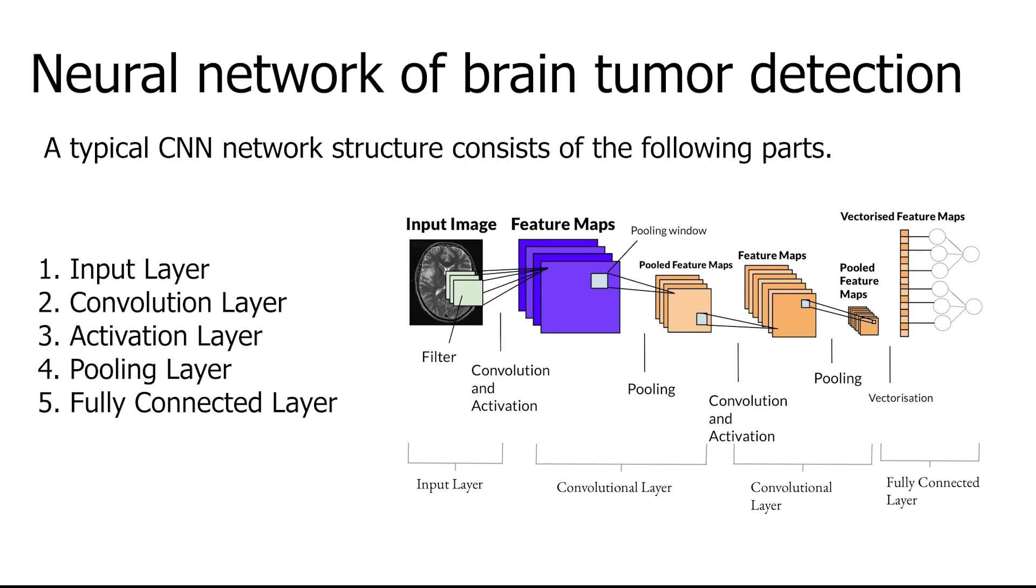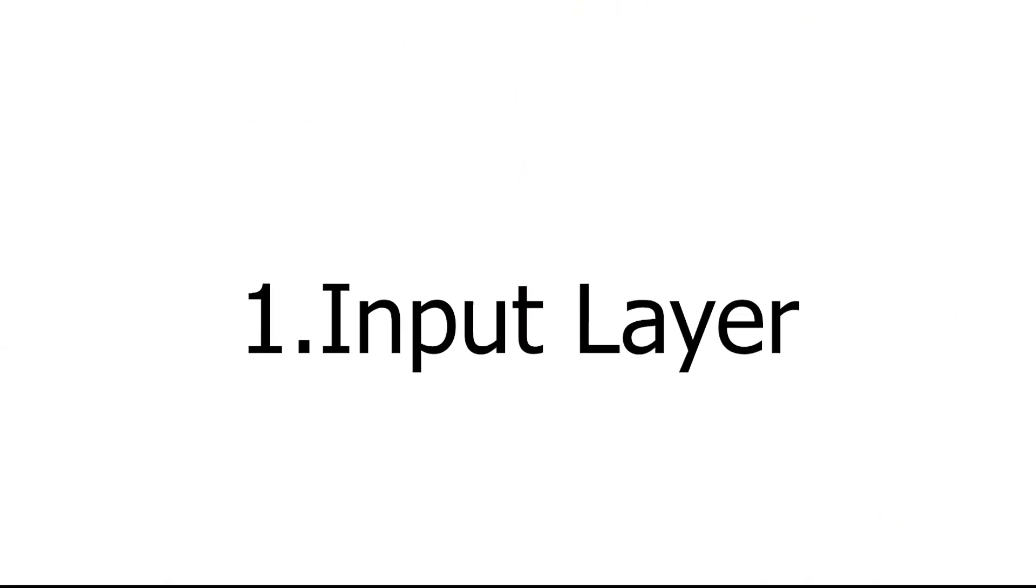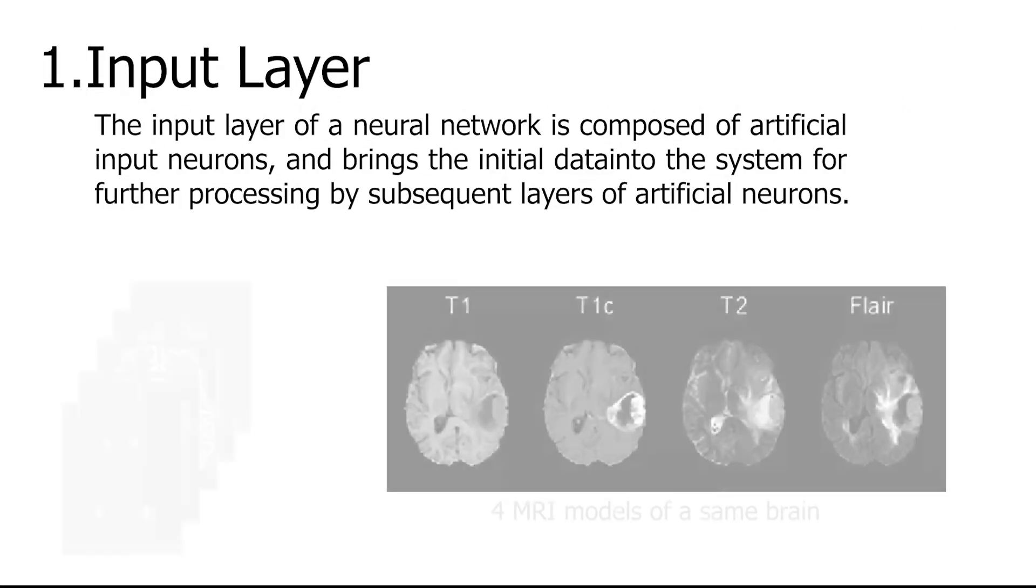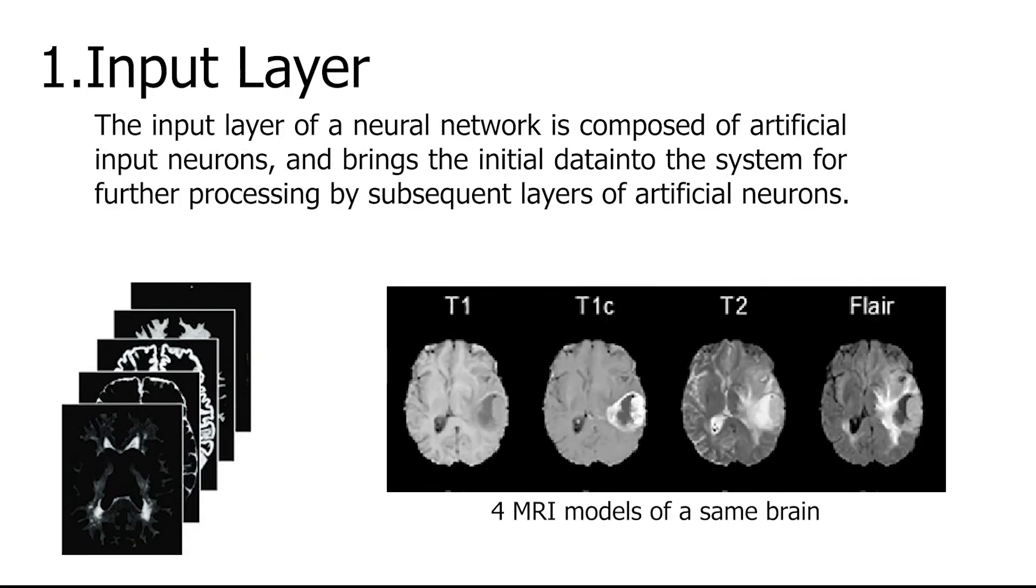The convolutional layer extracts features and the pooling layer reduces the complexity of the data. There can be multiple convolution and pooling layers as well. At last, the fully connected layer decides whether the brain has tumors. In this approach, multimodality has been used to get more accurate results.